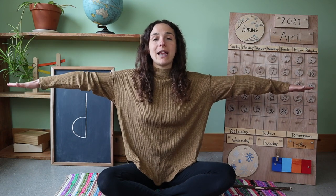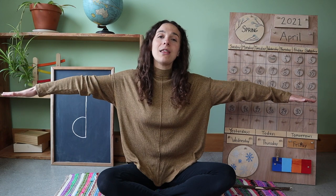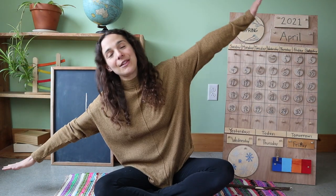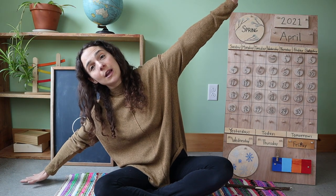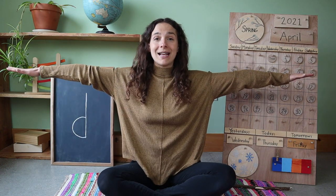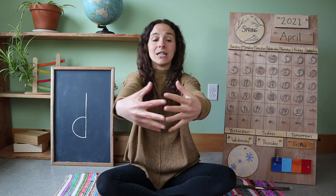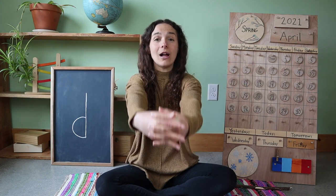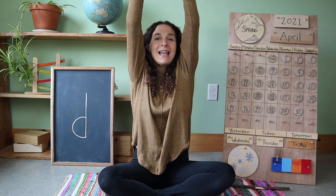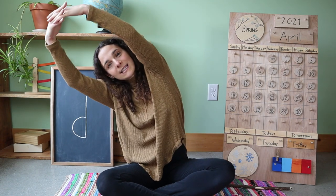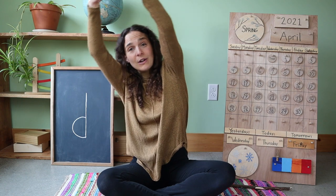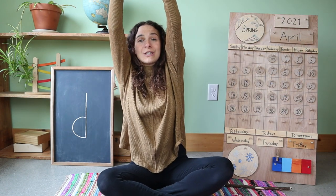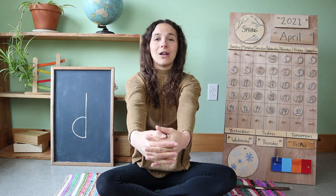Let's stretch our arms out like airplane wings and fly those airplanes to one side, fly them to the other side, bring your arms to the middle like a T, and now bring those arms into a circle out in front of you like this. Now take that circle up up up over your head and give a little stretch from one side, stretch over to the other side, one last stretch up to the top, and right down below.